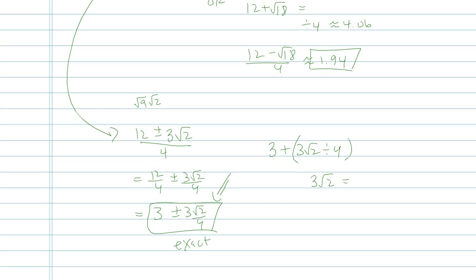Another way you could do it is do the 3 root 2 bit first, and then hit equals. Whatever your answer is, divide by 4, and then hit equals again, and then add 3 to it. You should get that same 4.06 as what we had before. Same idea: if I do 3 minus 3 root 2 divided by 4, I should get that decimal approximation from before.